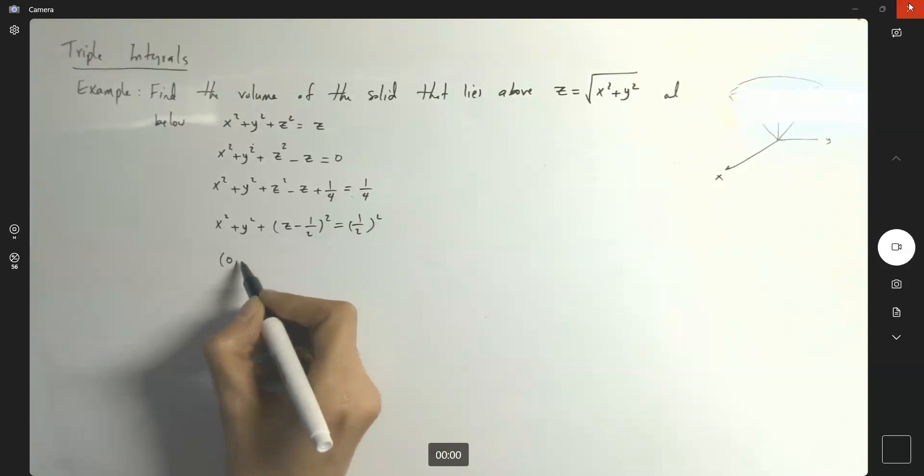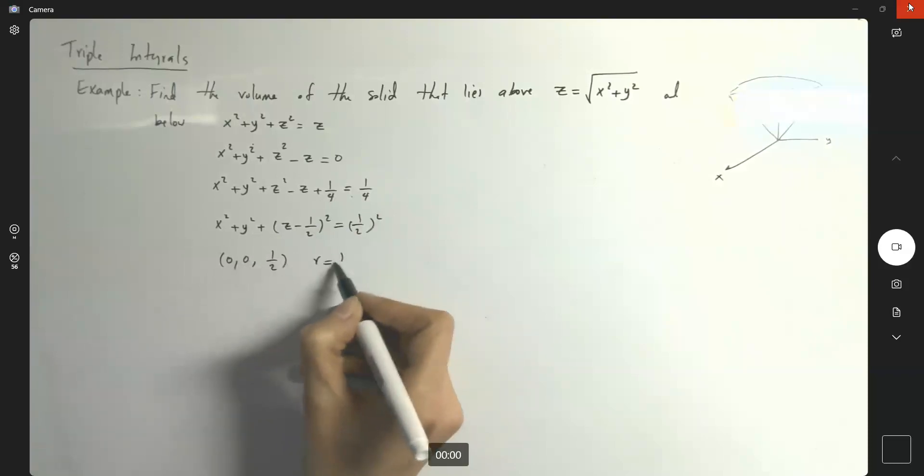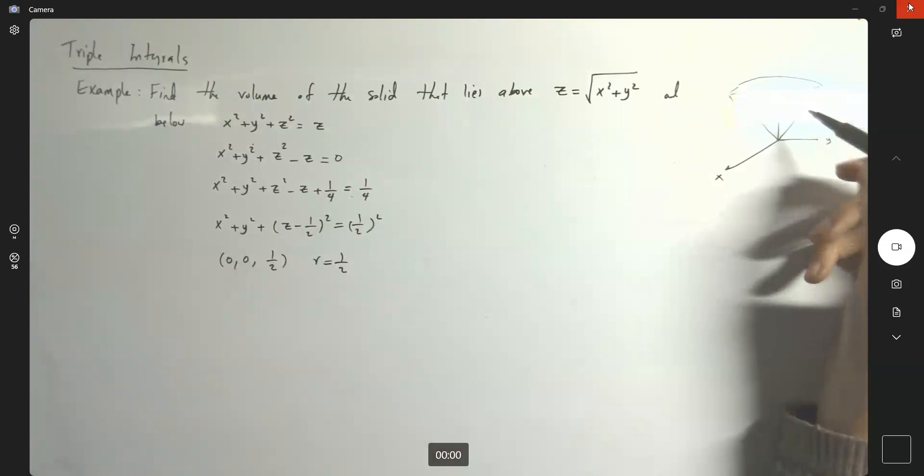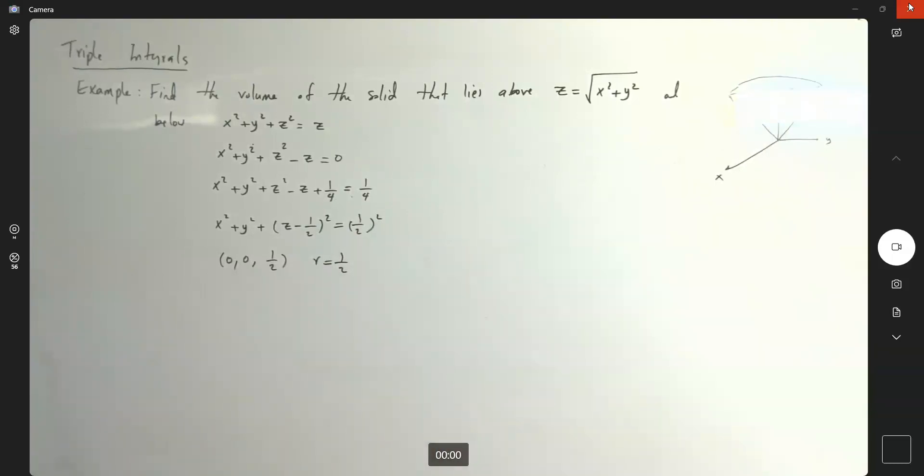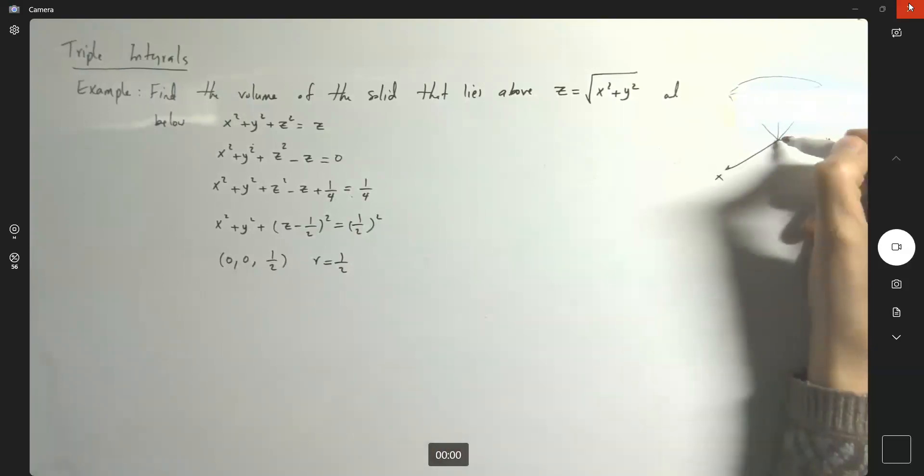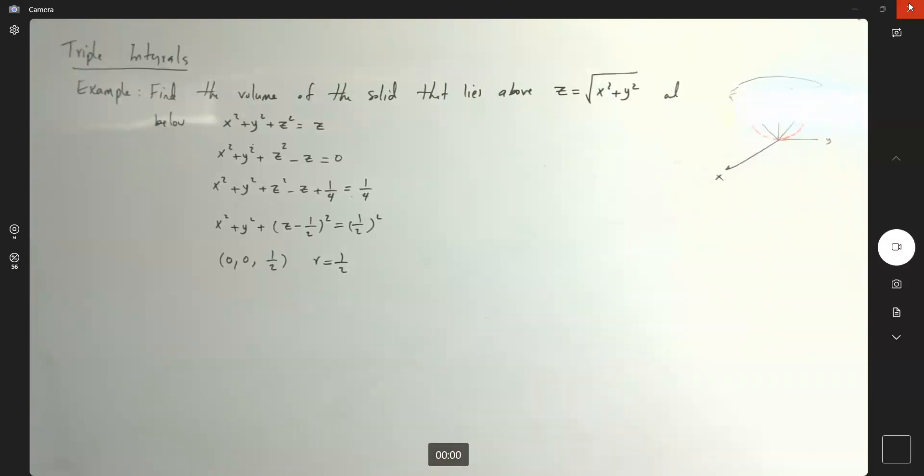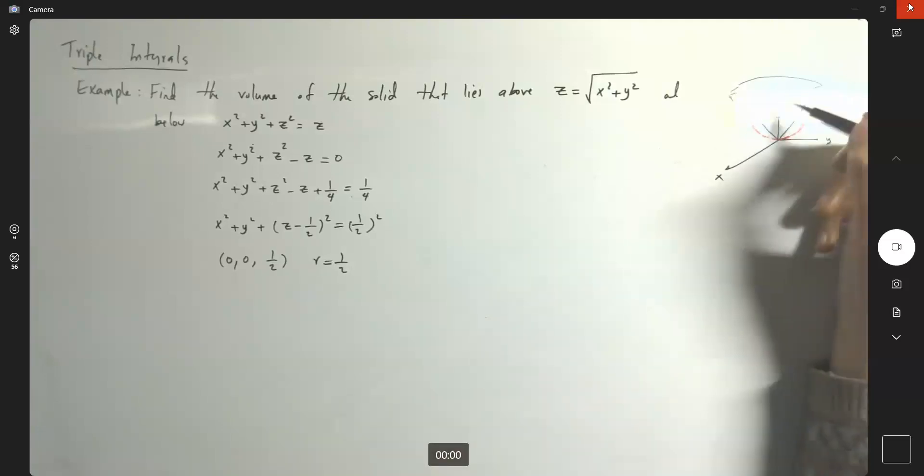So it means that you have a center at zero, zero, and a half with radius a half. Suppose this is just right here and then you have your sphere. Okay, so we're looking at this object here. It's above the cone and below the sphere, so it's roughly this object.